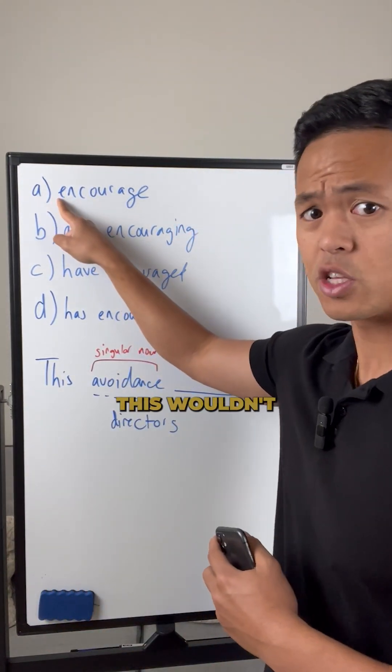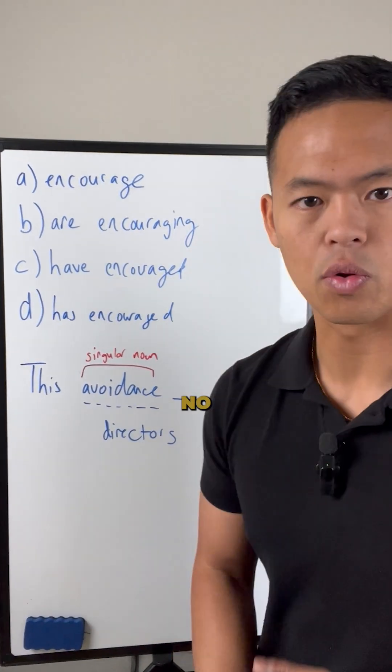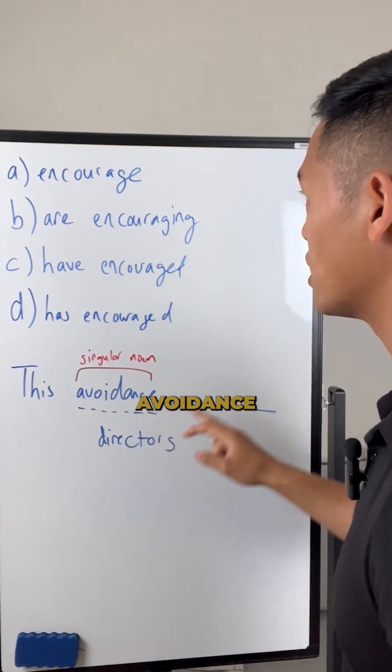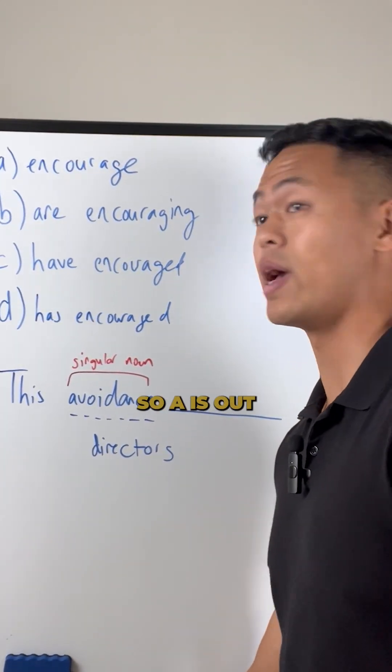So if we put in A, this wouldn't make sense: this avoidance encourage directors. No, that doesn't really work. This avoidance encourages would have worked, but in this case, we don't want to include this one. So A is out of the picture.